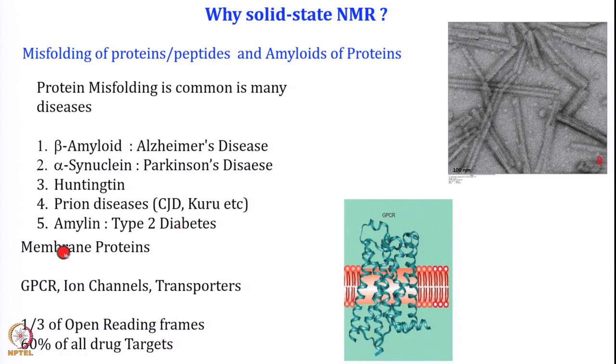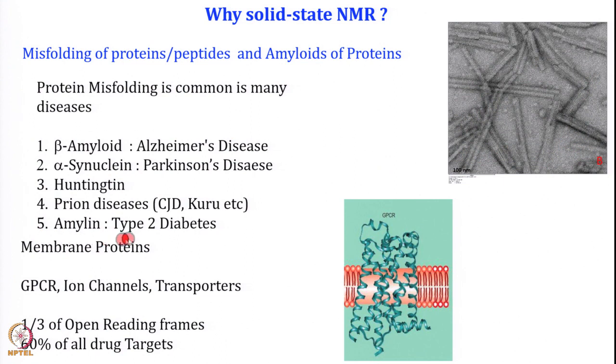Not only neurodegeneration — even in type 2 diabetes, a protein called amylin or IAPP (human islet amyloid polypeptide), a small peptide of 37 amino acids co-secreted with insulin, starts aggregating as type 2 diabetes progresses. This aggregation ruptures the insulin-producing beta cells, causing them to deplete — and that is actually type 2 diabetes. These protein aggregates are generally amenable for solid-state NMR-based structural biology techniques.